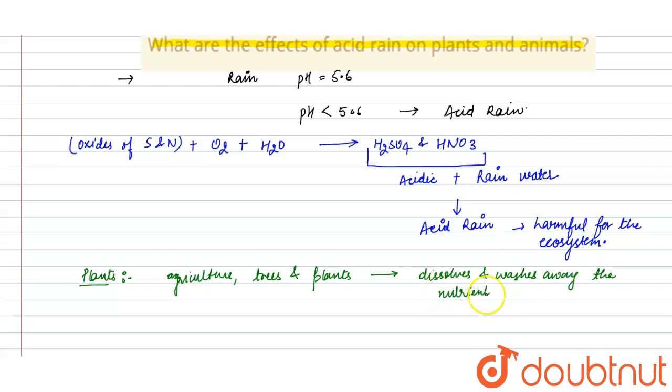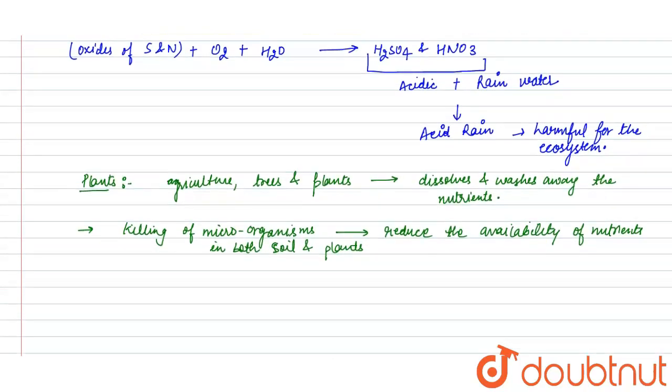Acid rain causes killing of microorganisms in soil, which ultimately reduces the availability of nutrients in both soil and plants, which makes the soil infertile in which plants cannot grow.